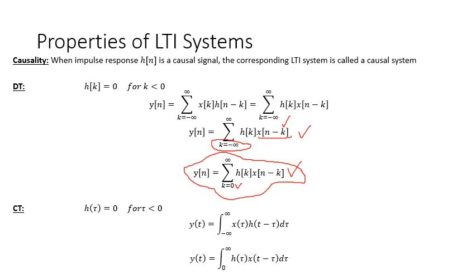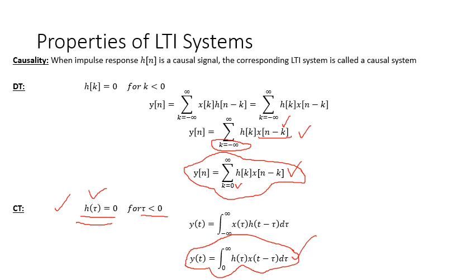Similar arguments apply to the continuous time case. If the continuous time system is causal, then H(t) = 0 when t is negative. If this is not the case, the system is non-causal. For the causal case, Y(t) equals the integration from 0 to infinity of H(τ) · X(t−τ) dτ.